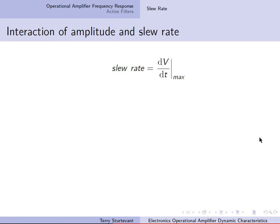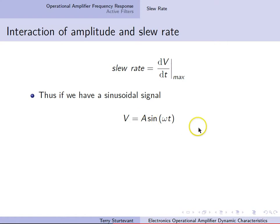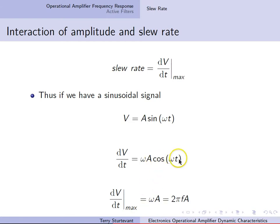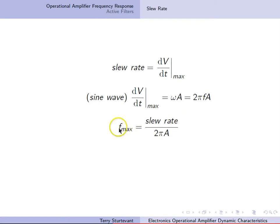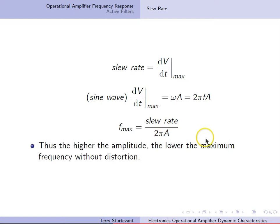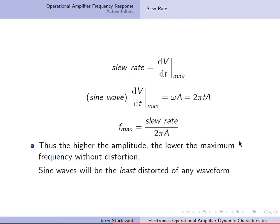There is an interaction between the amplitude and the slew rate. The slew rate equals the maximum rate of change of the voltage. For a sinusoidal signal A sine omega t, the derivative is omega A cosine omega t. The maximum of that — since the maximum of the cosine is 1 — is just omega A, where omega is the angular frequency, equal to 2 pi times the frequency. So the maximum rate of change of the voltage is 2 pi times the frequency times the amplitude. For a sine wave, the slew rate is 2 pi f times A. Rearranging, the maximum frequency is the slew rate over 2 pi times the amplitude. The higher the amplitude, the lower the maximum frequency you can have without distortion. Sine waves will be the least distorted of any waveform.